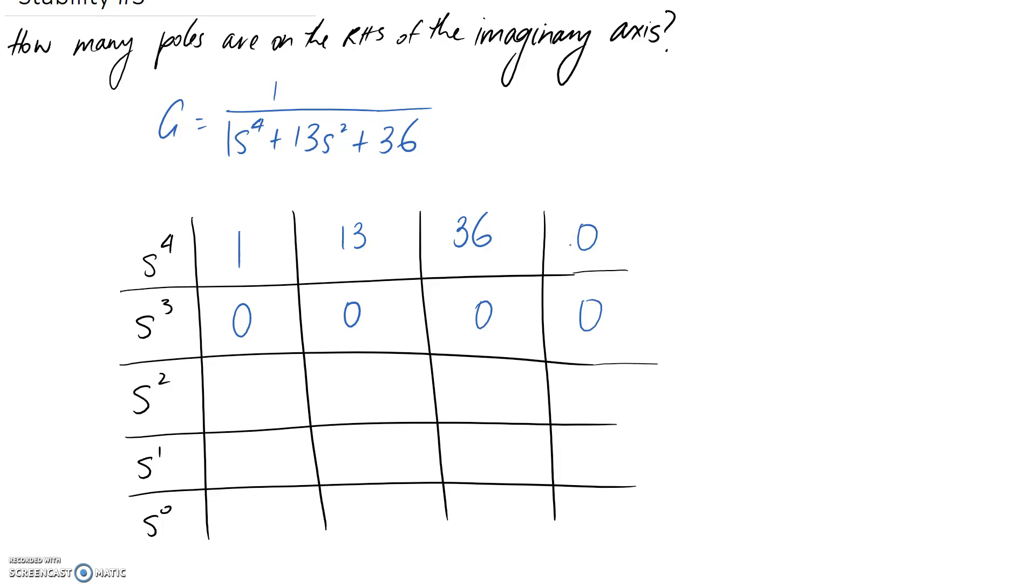And we write out the polynomial that's associated with it. So since this is the s to the 4 row, this one here is going to be 1s to the 4th. So this one here represents our squared term. So it's 13s squared. And then this one here represents our constant on the end. So it's going to be 36. So this is the polynomial that represents this row. And in fact, since it happened in the first row, it's the same as what we got for our denominator.